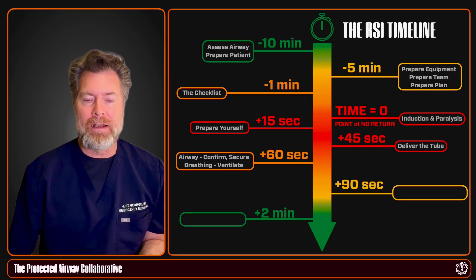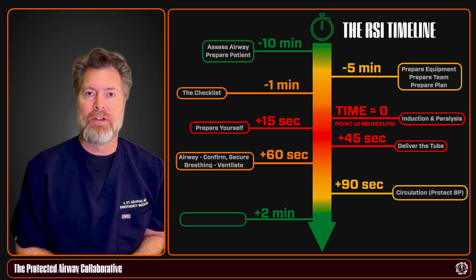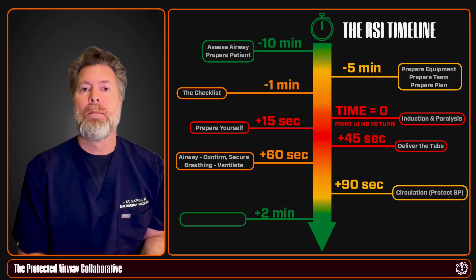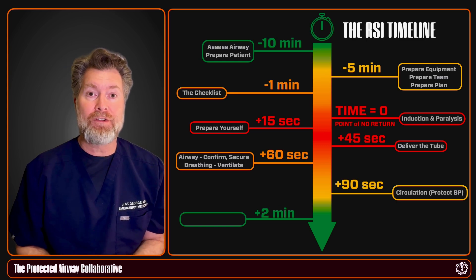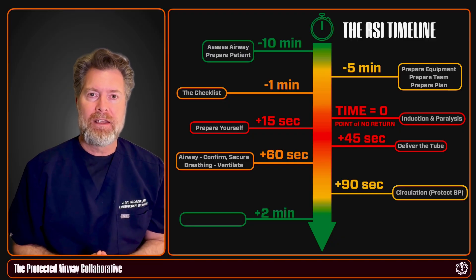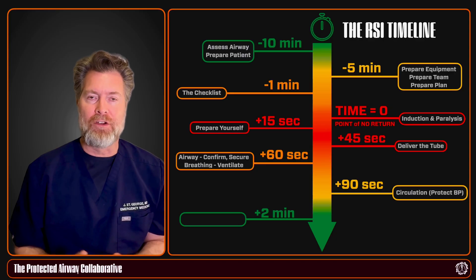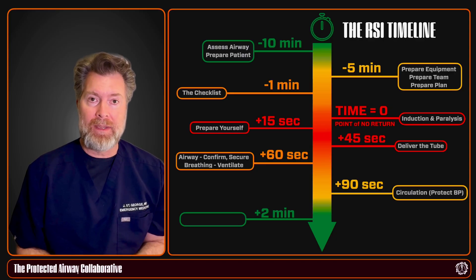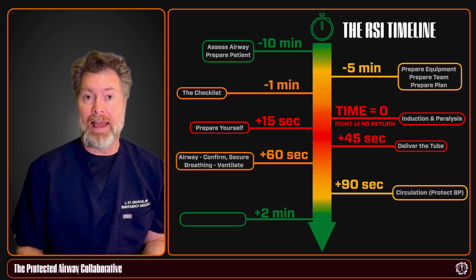That confirmation process takes about one to one and a half minutes. Once completed, recheck the patient's hemodynamics. The airway is secure, but giving sedatives, paralytics, and positive pressure ventilation can definitely affect hemodynamics. You want to protect the patient's cardiac output and ensure you don't need to start pressors or fluids to keep hemodynamics stable and prevent peri-intubation cardiac collapse.